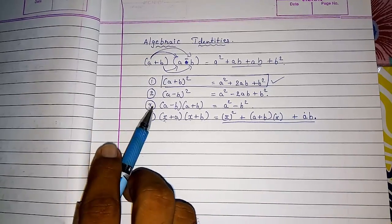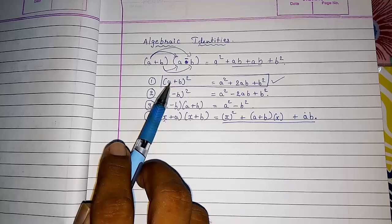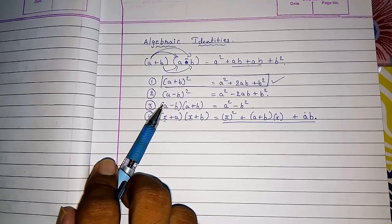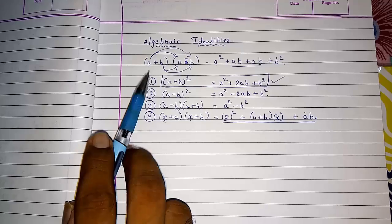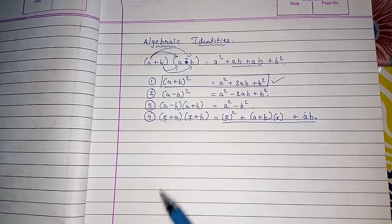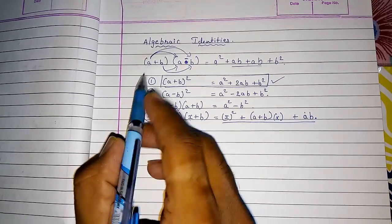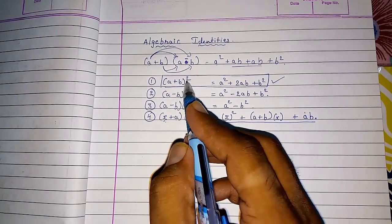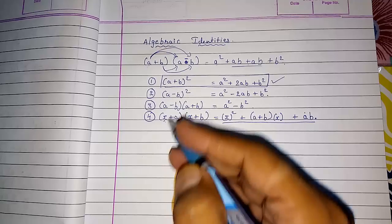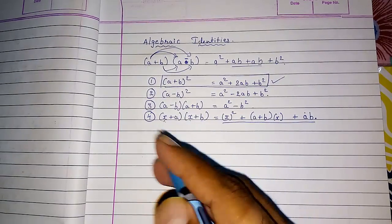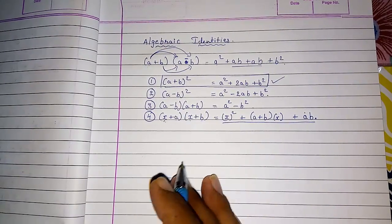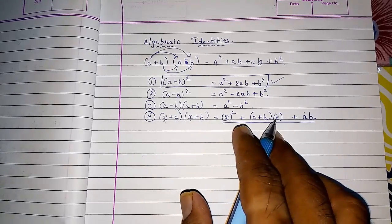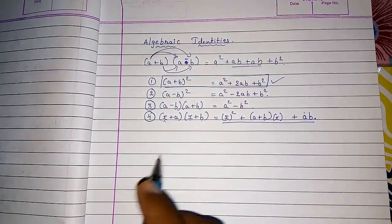These four are so important that they appear in class 7, class 8, and class 9. But in class 9 you are getting more identities. So actually these are the base and these are more important. From this they had started this series, going on and on, finding many other shortcuts, and they called them identities.